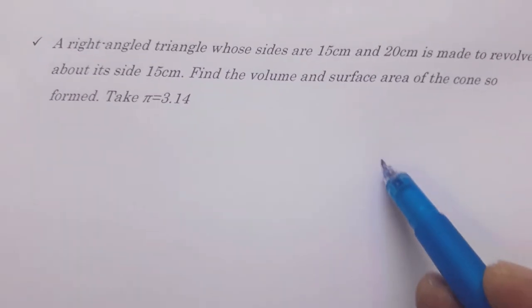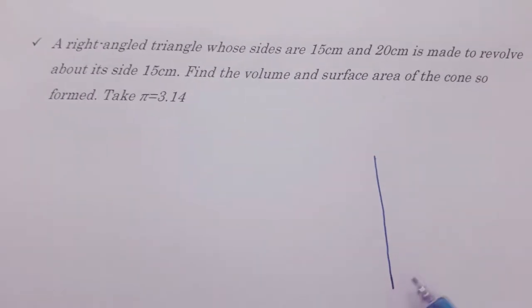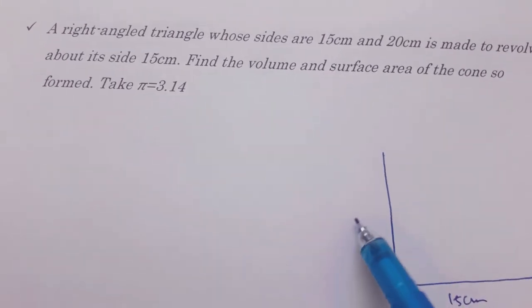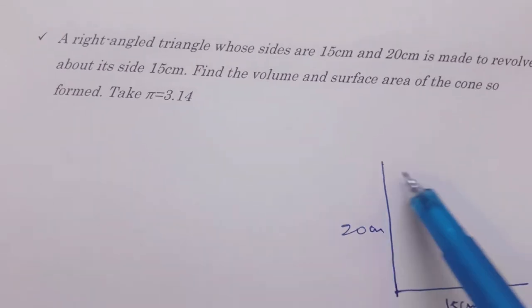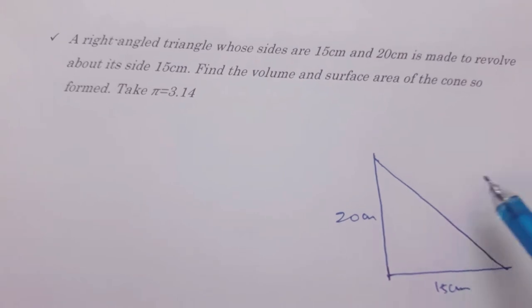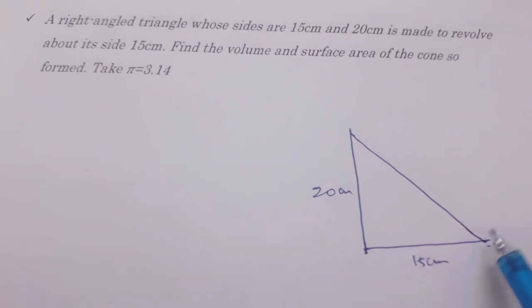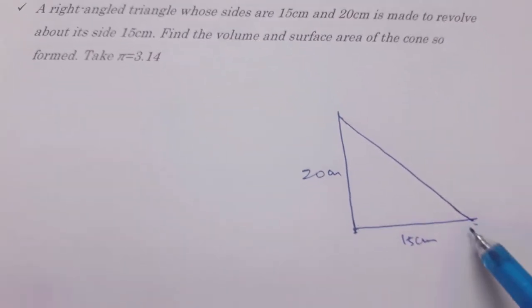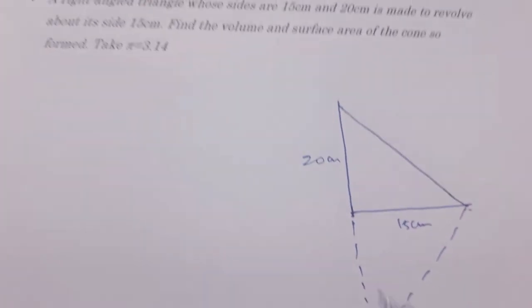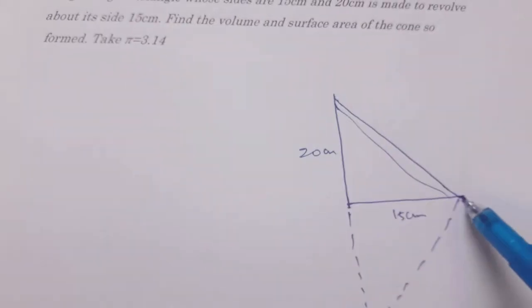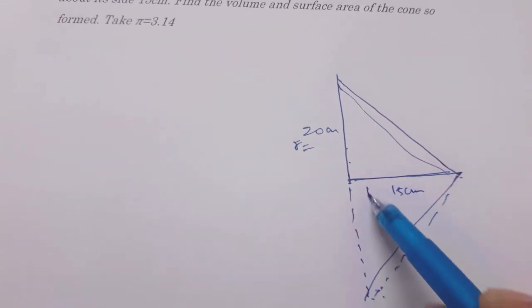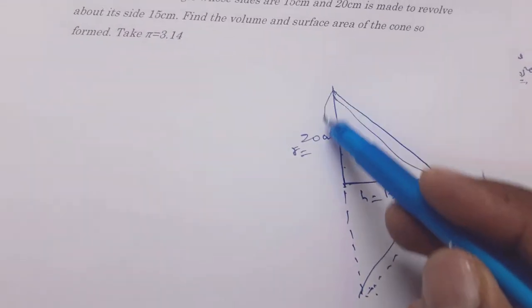A right-angled triangle whose sides are 15 cm and 20 cm is revolved about its side 15 cm. So we need to hold this and we need to revolve. Then a cone will come in this form. This is the cone whose radius will be 20 and height will be 15. Cone will form like this.